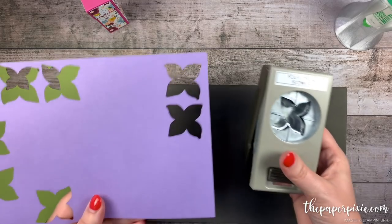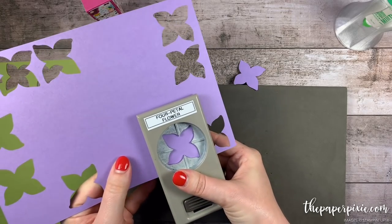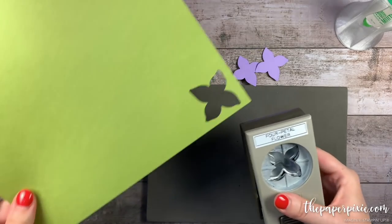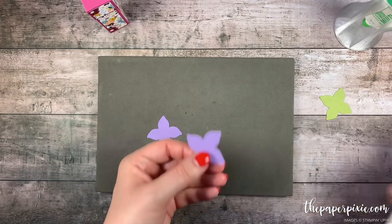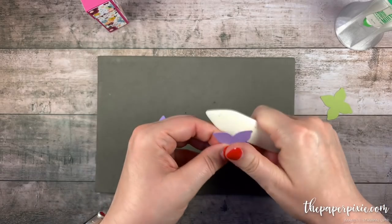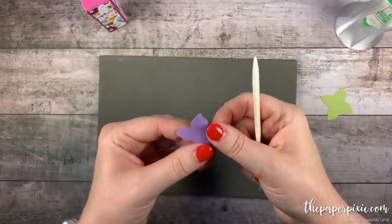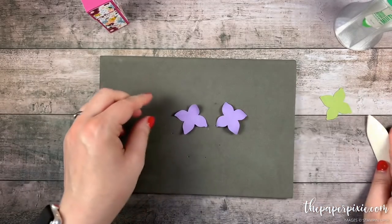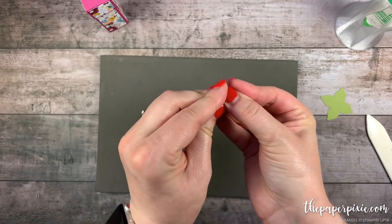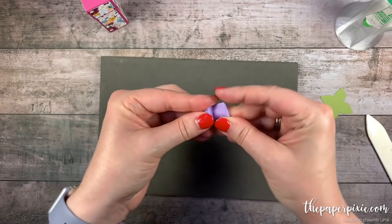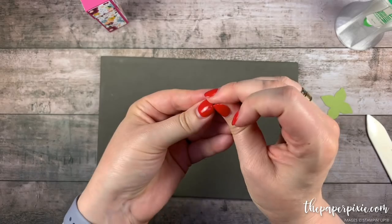I'm going to use the four petal flower punch. I'm going to punch two flowers out of Highland Heather and then one flower out of Old Olive. The Old Olive piece I'm just going to put off to the side here but I'm going to take my bone folder and thumb and just break down the paper fibers of the Highland Heather flowers. Okay and then I'm just going to wrinkle these up. Now another thing you could do is spritz this with some stampin mist or some rubbing alcohol. Wrinkle it up and then let it dry and then you'll have a lot of really great texture to it but for the sake of this video I'm just going to wrinkle these up dry.